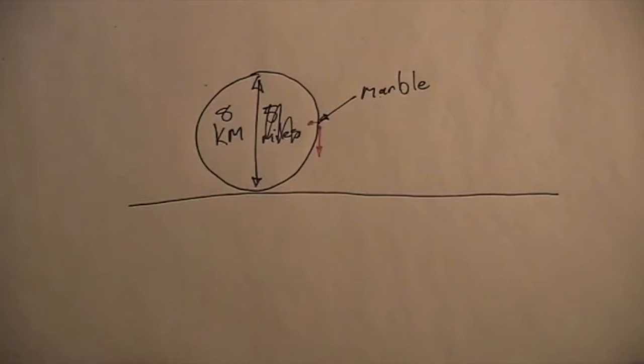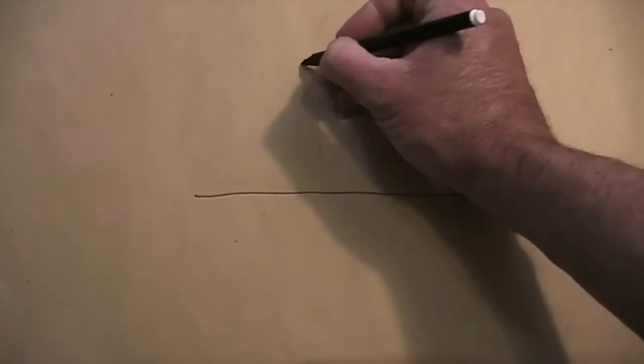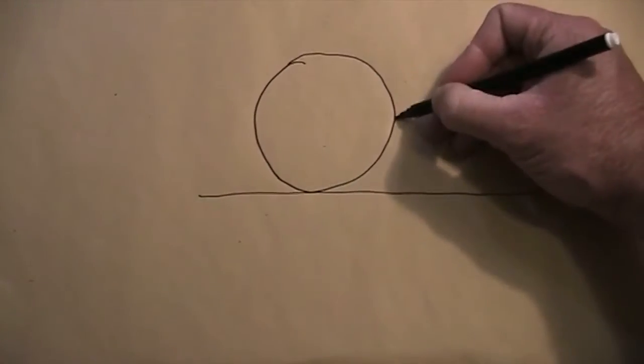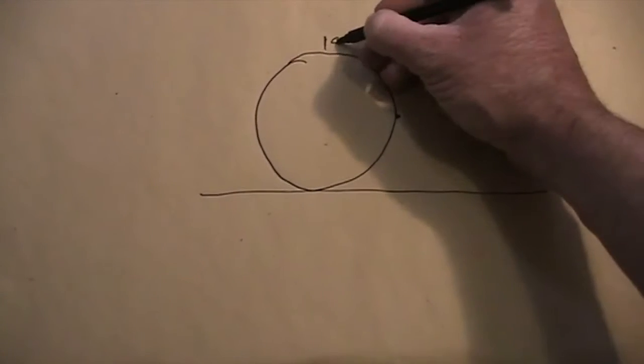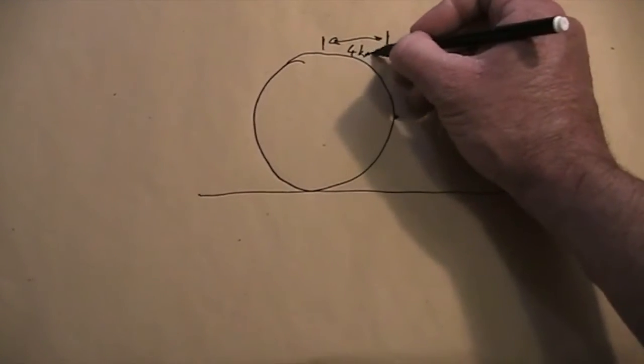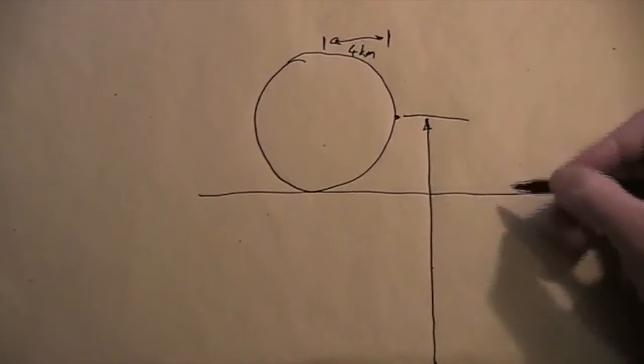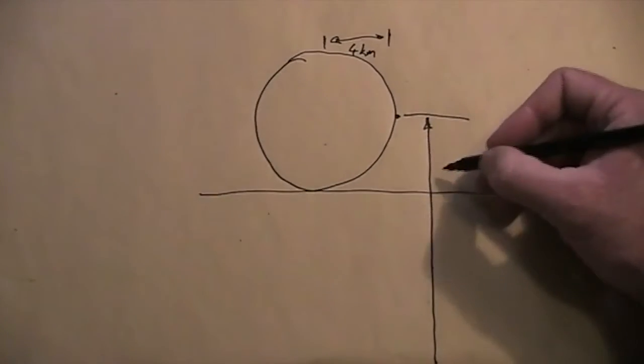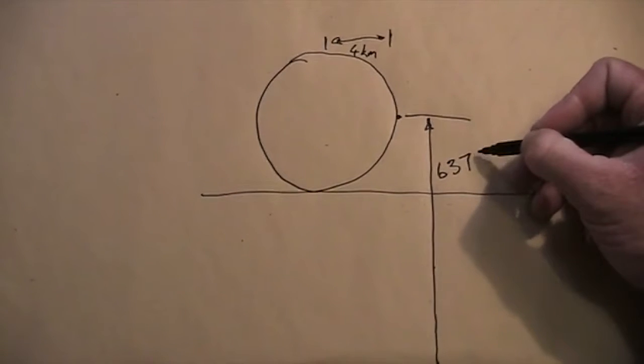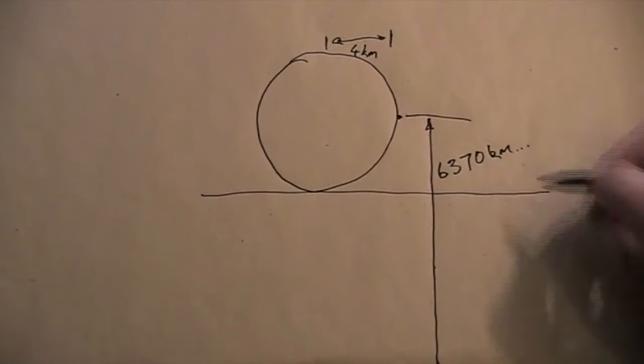So we're going to calculate the force between the marble and the rock and between the marble and Earth. There's a bunch of variables we need to grab. First, there's the distance. The distance between the centre of the marble and the centre of the rock is around 4 kilometres. The distance between the centre of the Earth and the centre of the marble is around 6,370-ish kilometres.